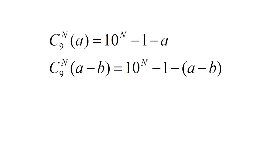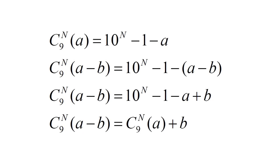Therefore, the nines complement of a minus b is ten to the nth power minus one minus a minus b, which is equal to ten to the nth power minus one minus a plus b, which is equal to the nines complement of a plus b.